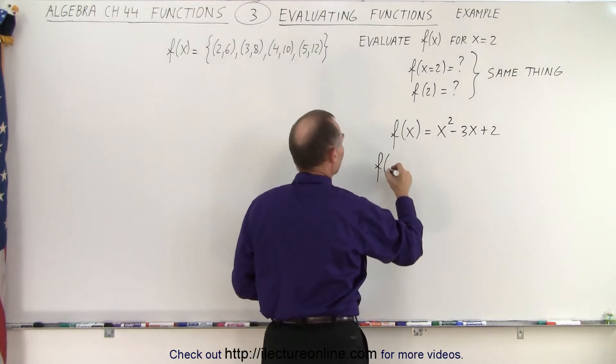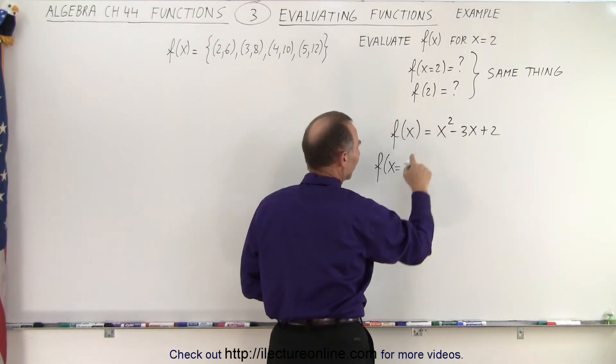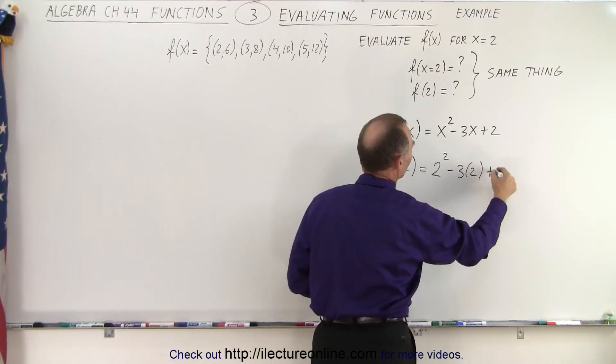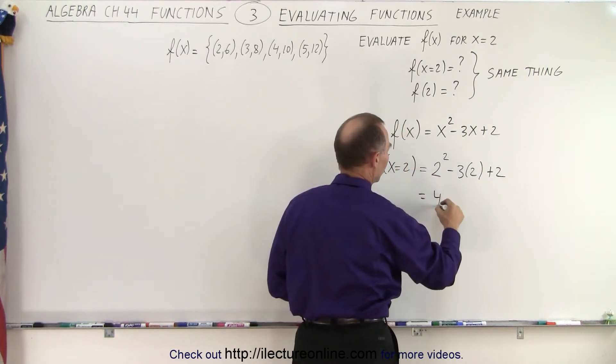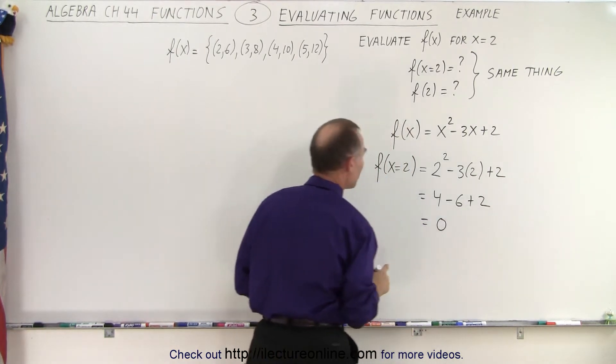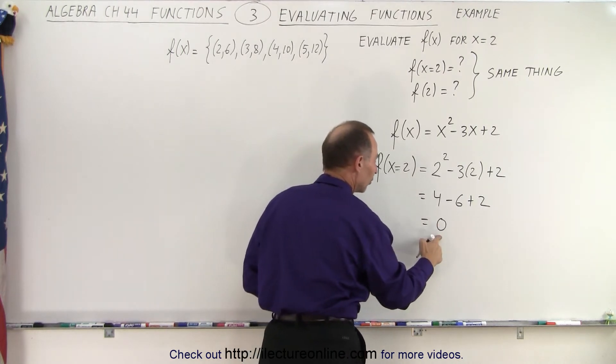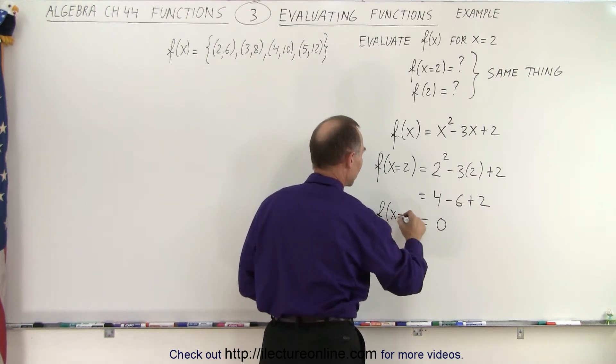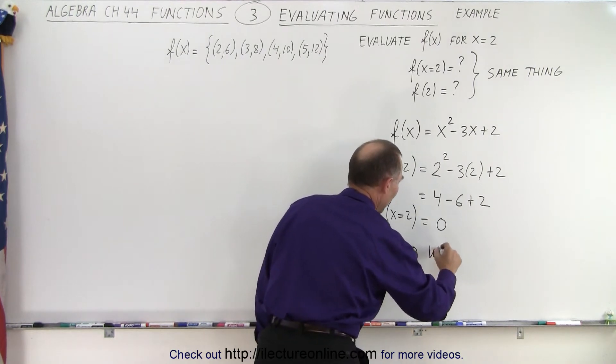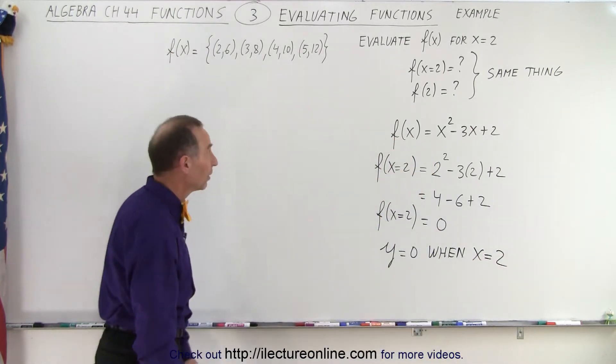So we can say that f when x is equal to 2 is equal to, and everywhere you see an x, we're going to replace that x by the number 2. So this becomes 2² - 3(2) + 2. So this is equal to 4 - 6 + 2, so it's equal to 6 - 6, or 0. So that means when you evaluate the function for the variable x being equal to 2, the result is equal to 0. So the function when x equals 2 is equal to 0, or y is equal to 0 when x is equal to 2. That's another way of looking at it.